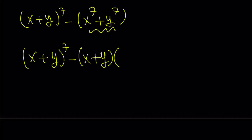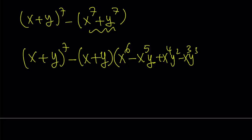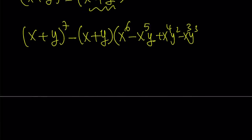The second factor becomes x to the sixth. Here's how we form it: you use the plus-minus sign alternating, and the powers of x go down while the powers of y go up, and their sum is always six. So you start off with x to the sixth, then x to the fifth y, plus x to the fourth y squared, minus x cubed y cubed. Then x squared y to the fourth, minus x y to the fifth, and finally plus y to the sixth.